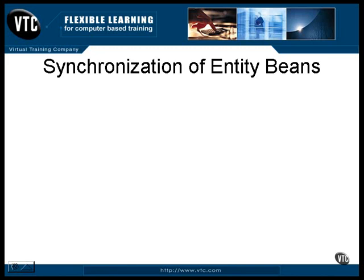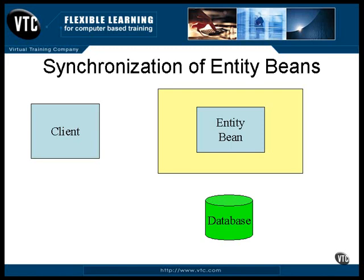Here's a rough idea of how the container bean takes care of this situation. A client program calls a method of the bean. This method is going to update some information in the database, but the message doesn't go directly to the bean — it gets only as far as the container of the bean. The container communicates with the database to lock any rows that may be affected by the action to be taken. At this point, the entity bean is loaded into memory, and the data is loaded into the bean from the database. We now have the bean and the database synchronized with the same data, and the lock on the database guarantees that nothing is going to change while the bean is working.